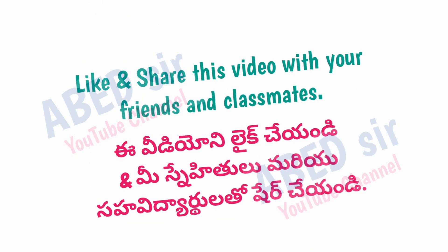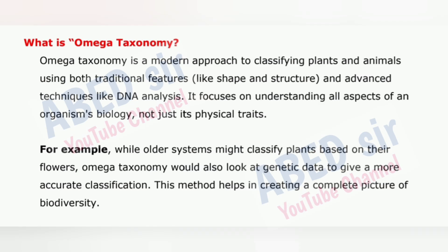Next important question: What is omega taxonomy? Omega taxonomy is a modern approach to classifying plants and animals using both traditional features, like shape and structure, and advanced techniques like DNA analysis. It focuses on understanding all aspects of an organism's biology, not just its physical traits. For example, while older systems might classify plants based on their flowers, omega taxonomy would also look at genetic data to give a more accurate classification. This method helps in creating a complete picture of biodiversity.